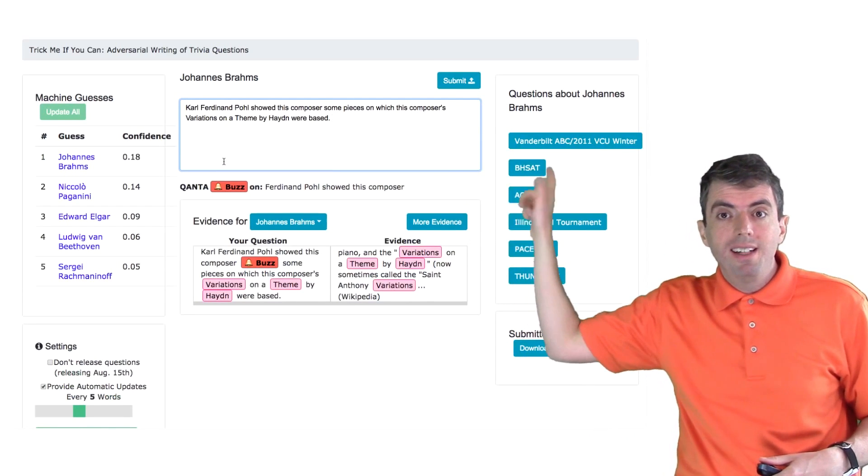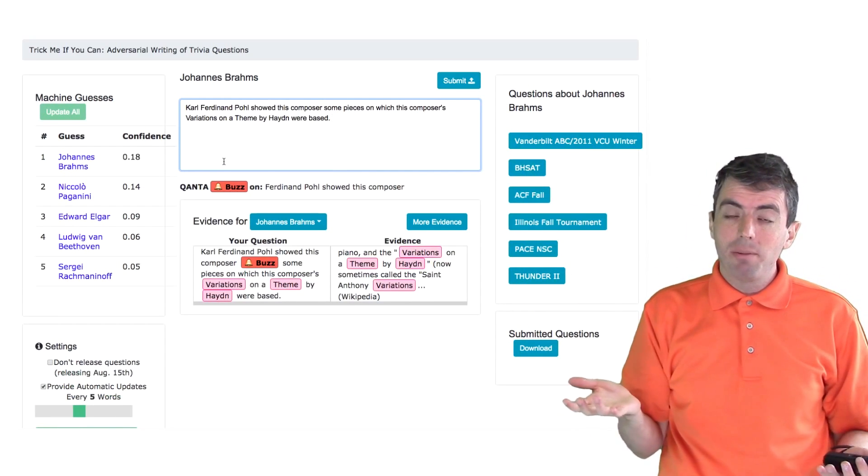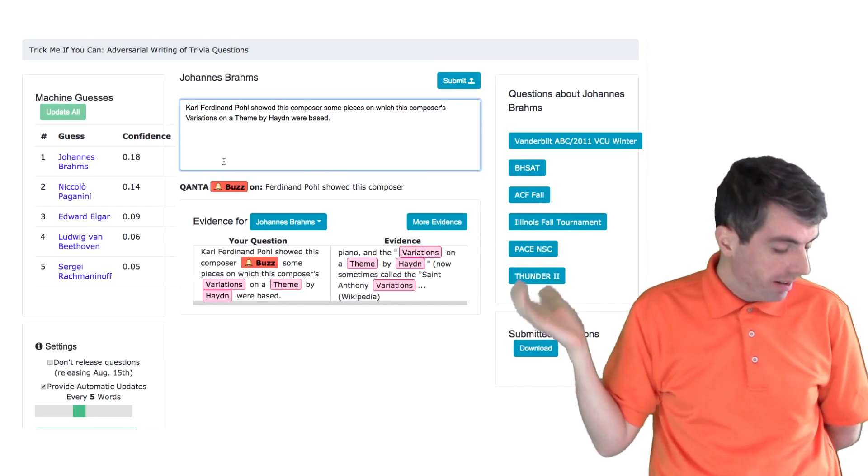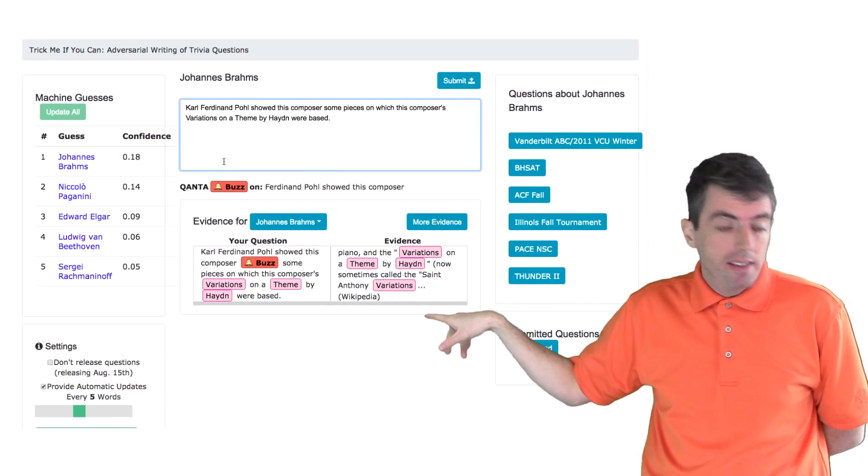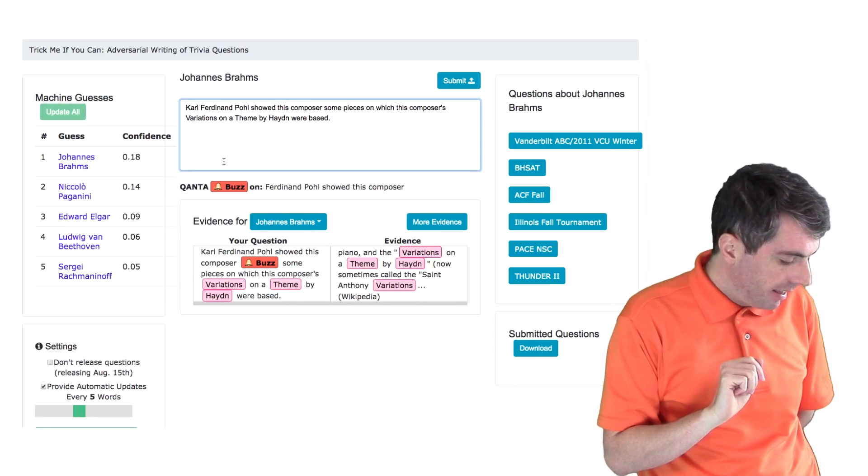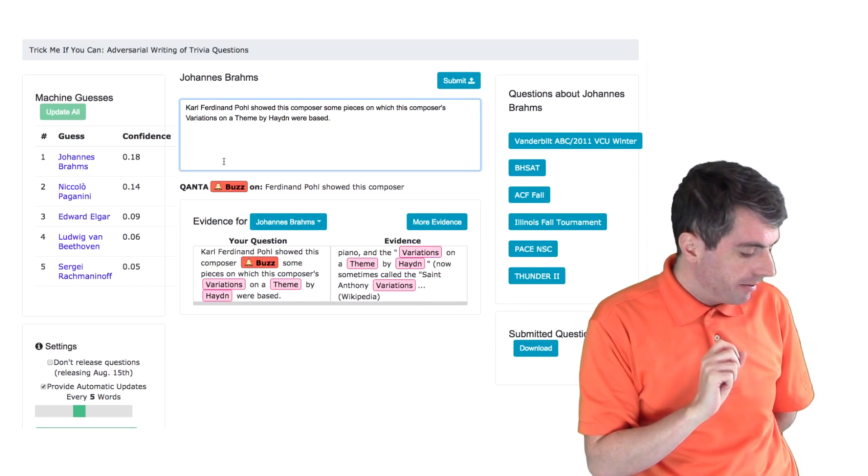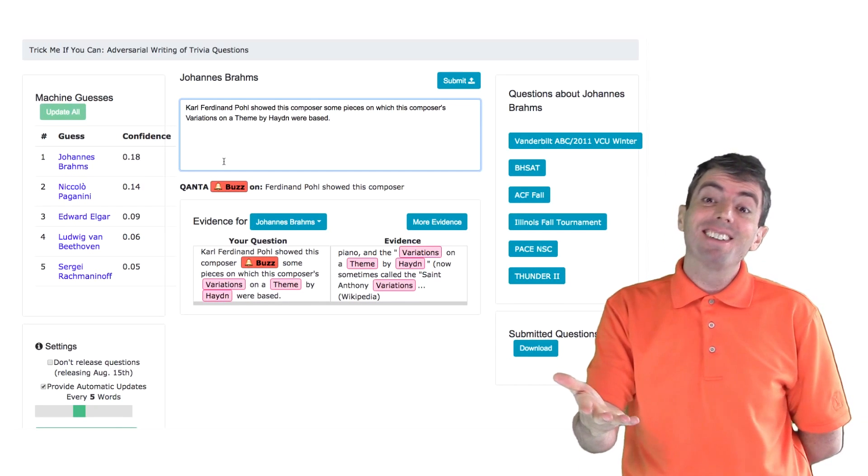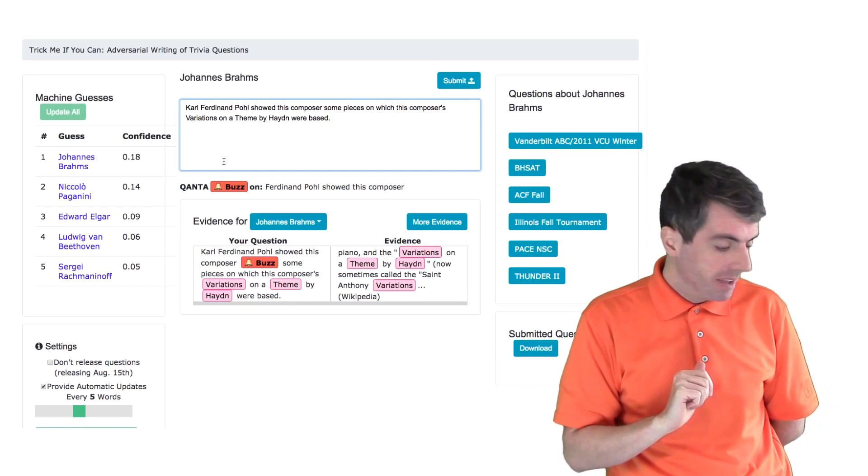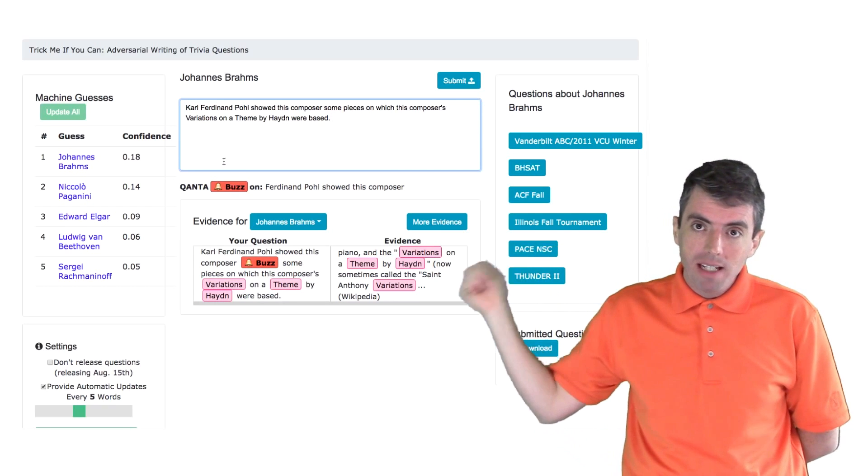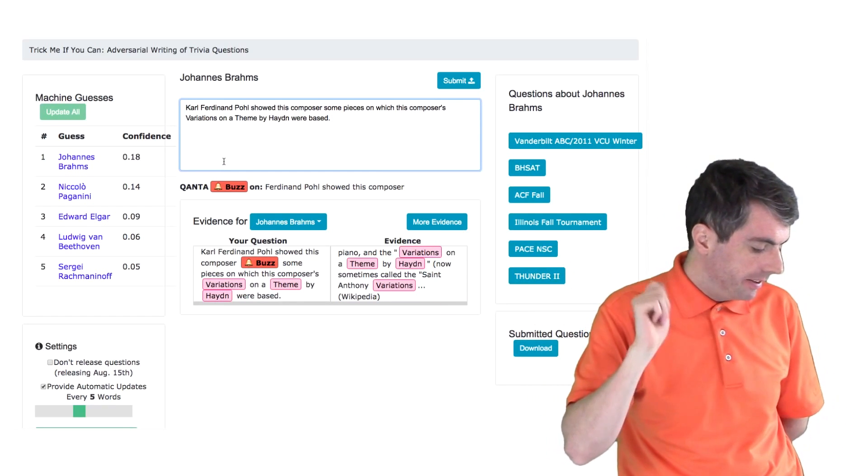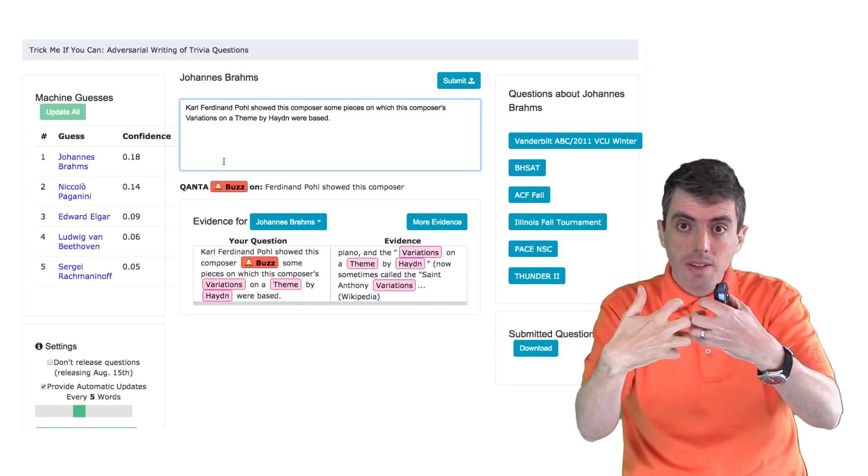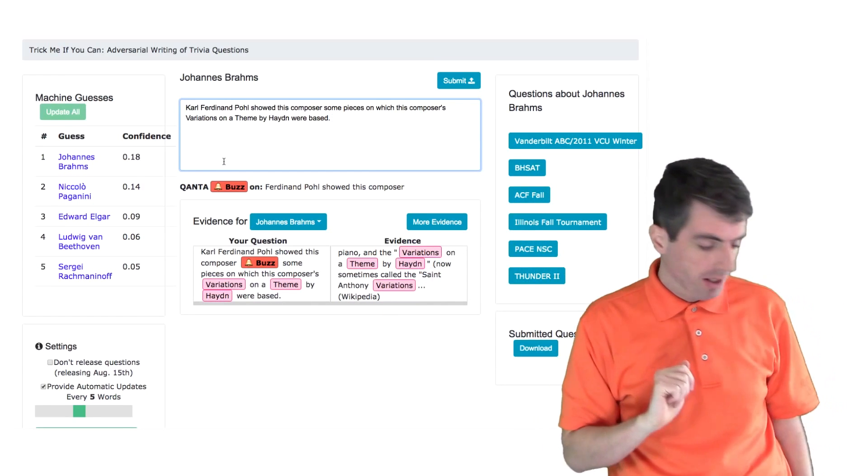So I have just put in a sentence. Let's say that I want to start my question in this way. Even though this might be a hard clue, the system has seen it before, so it's able to say that if I see the phrase Karl Ferdinand Pol, then I know that the answer to this question is almost certainly going to be Johannes Brahms. And it buzzes immediately after seeing Karl Ferdinand Pol, and then this composer knows to put those two things together and answer with Brahms.